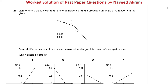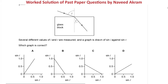From May/June 2020 Paper 1 Variant 1: light enters a glass block at an angle of incidence i and produces an angle of refraction r in the glass. Several different values of i and r are measured and a graph is drawn of sine i against sine r. Which graph is correct? Here are four graphs — please pause the video and think which will be the right answer.